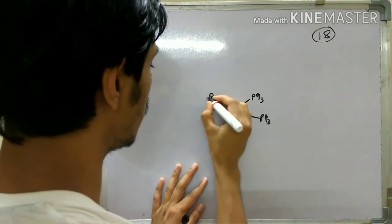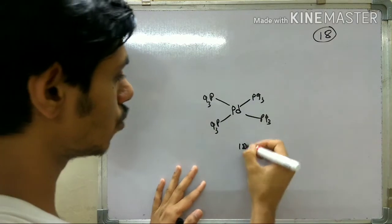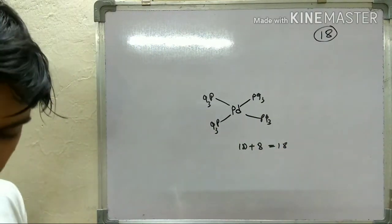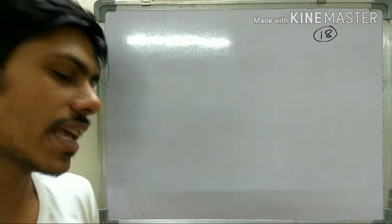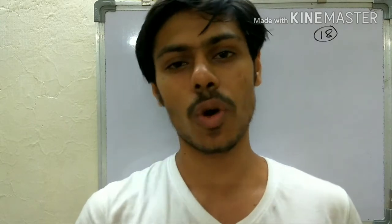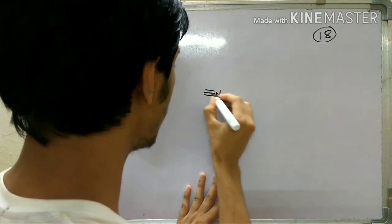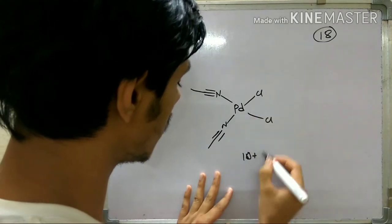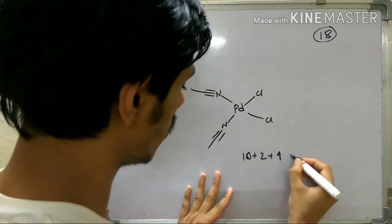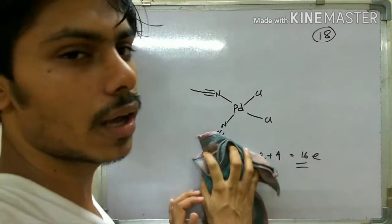For example, consider palladium with four phosphine ligands. Palladium contributes 10 electrons and each phosphine contributes 2, so 8, giving 18 electrons total — it is stable. Now there are cases where 16-electron complexes are also very stable, but only for square planar complexes. For palladium and nickel, 16-electron complexes are also stable. For example, a palladium complex with an acetonitrile group and two chloride ligands: palladium contributes 10 electrons, each Cl contributes 1 (total 2), and acetonitrile contributes 2, giving a 16-electron complex that is still stable.